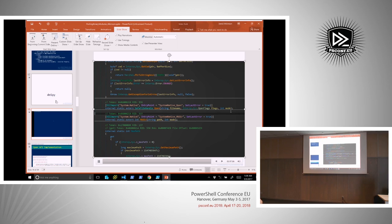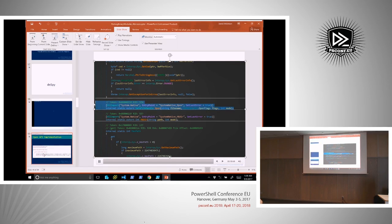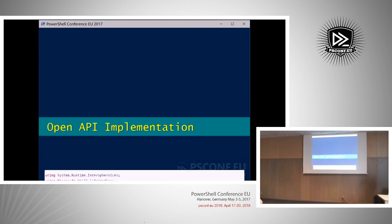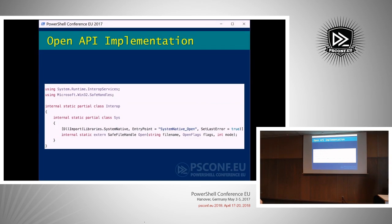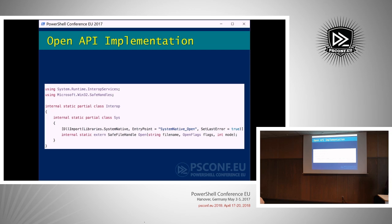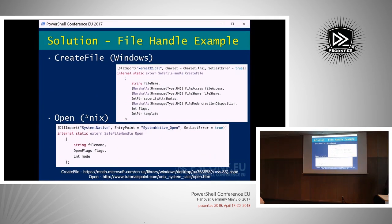We've found the P/Invoke definition, which I literally cut and pasted from Microsoft. Now I have a reference to how to call P/Invoke for 'open'. At the end of the day we have the P/Invoke definition for CreateFile — the Windows API — and the P/Invoke definition for 'open' — the Unix API. That solves defining those two P/Invoke calls.